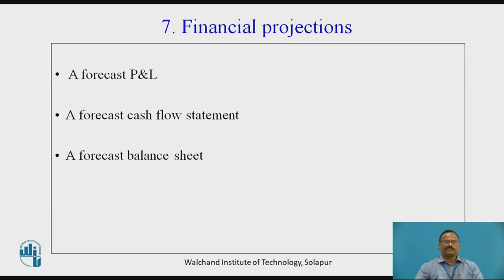The seventh component is financial projections. This includes a forecast profit and loss account — sales framed using market research data, with profit margin determined based on competition. A forecast cash flow statement, which will indicate liquidity. A forecast balance sheet, which will show that the forecast is achievable with an acceptable capital structure — that is, the balance of debt and equity. Present only the gist here and give the details in the appendices.